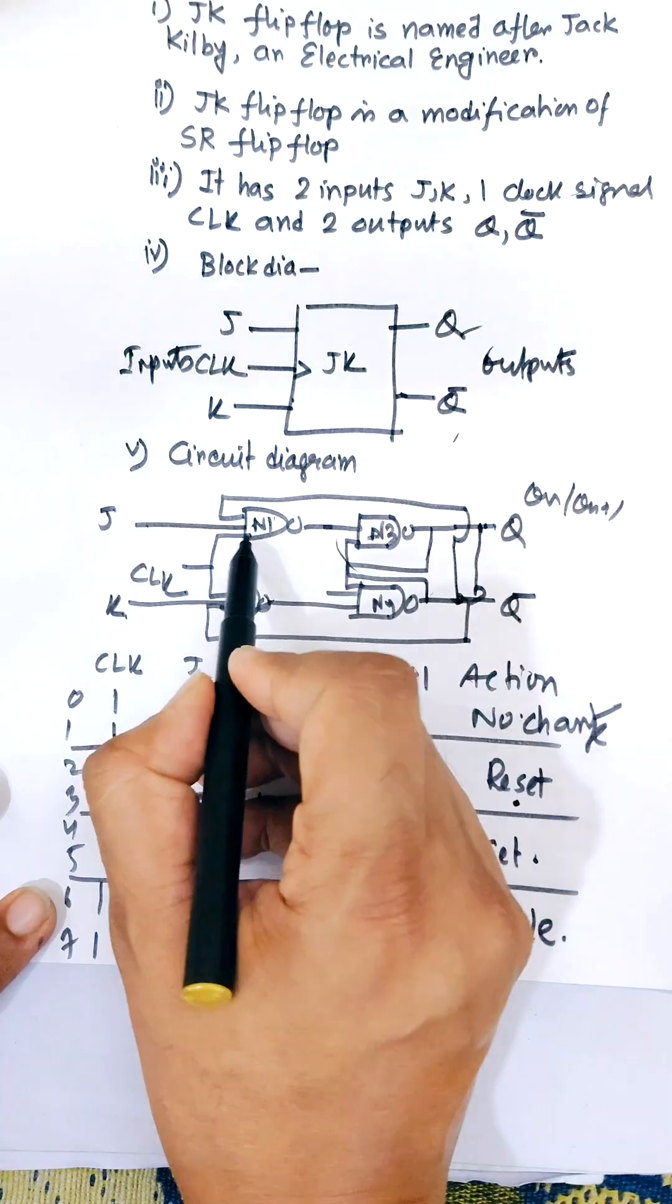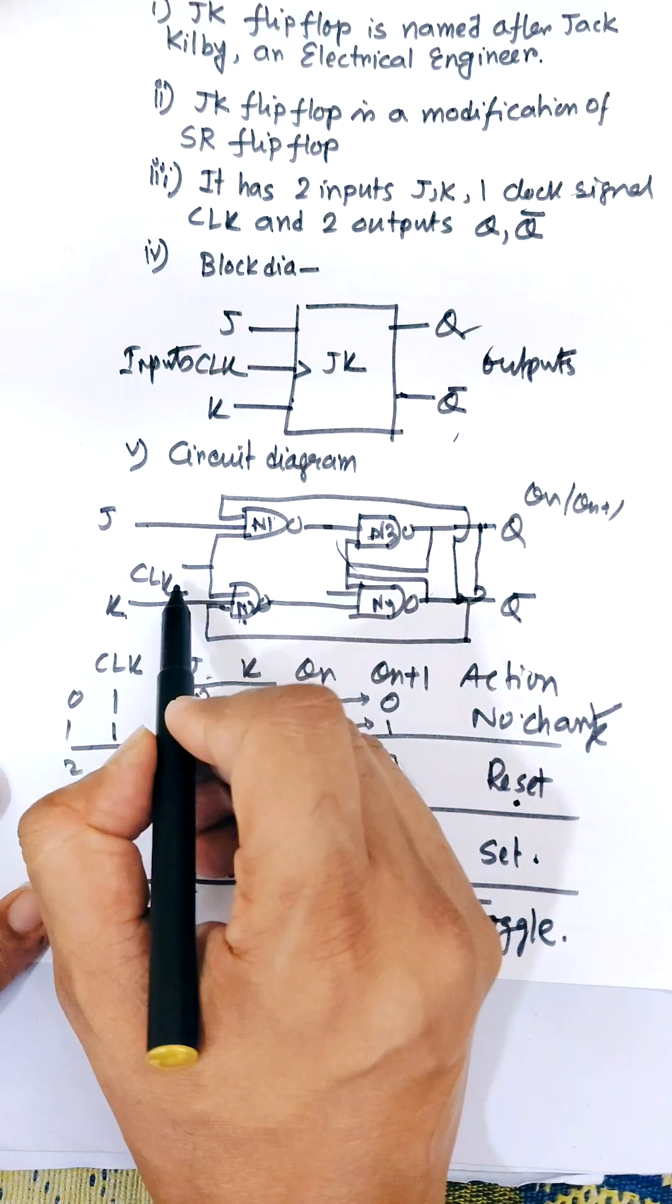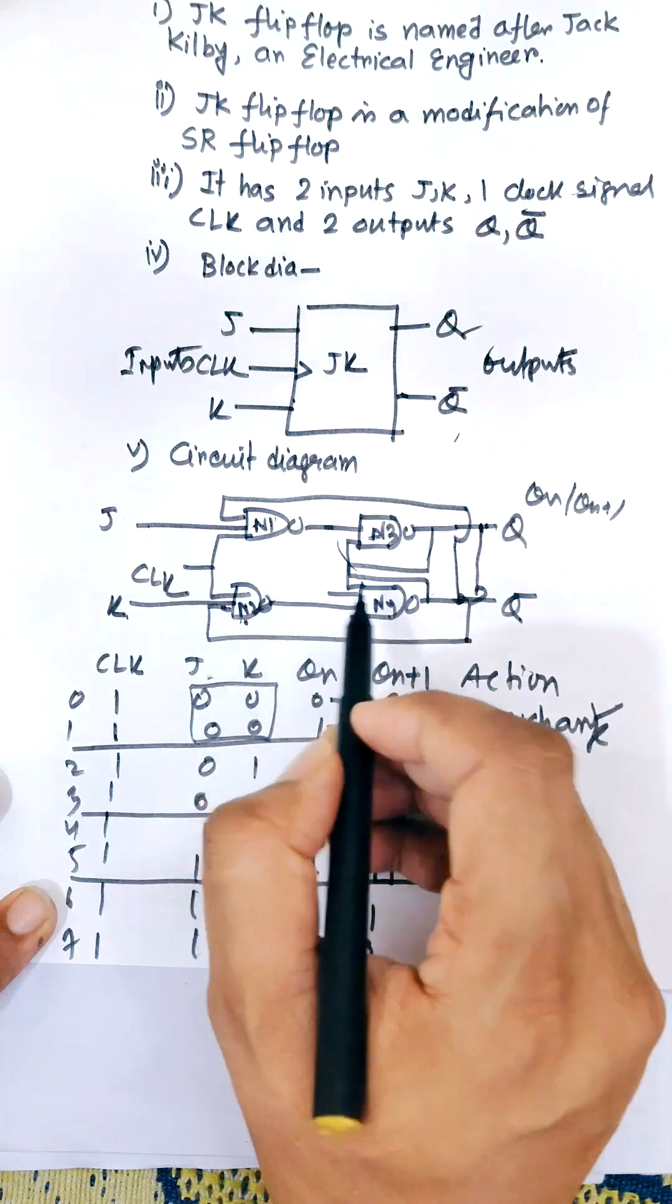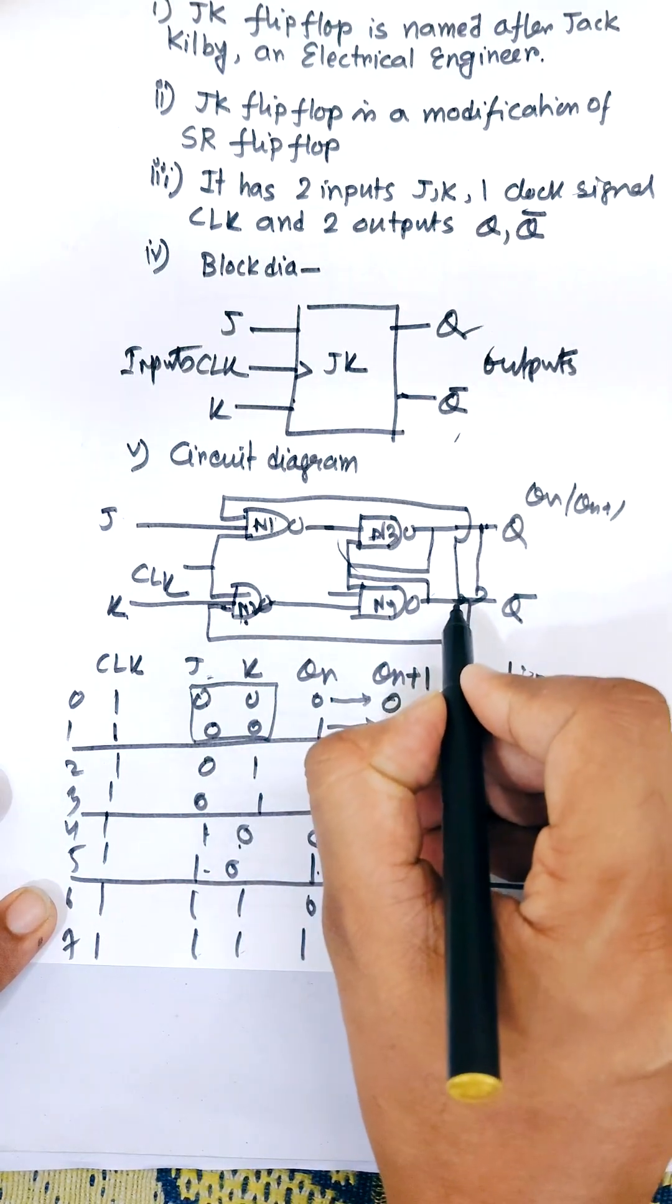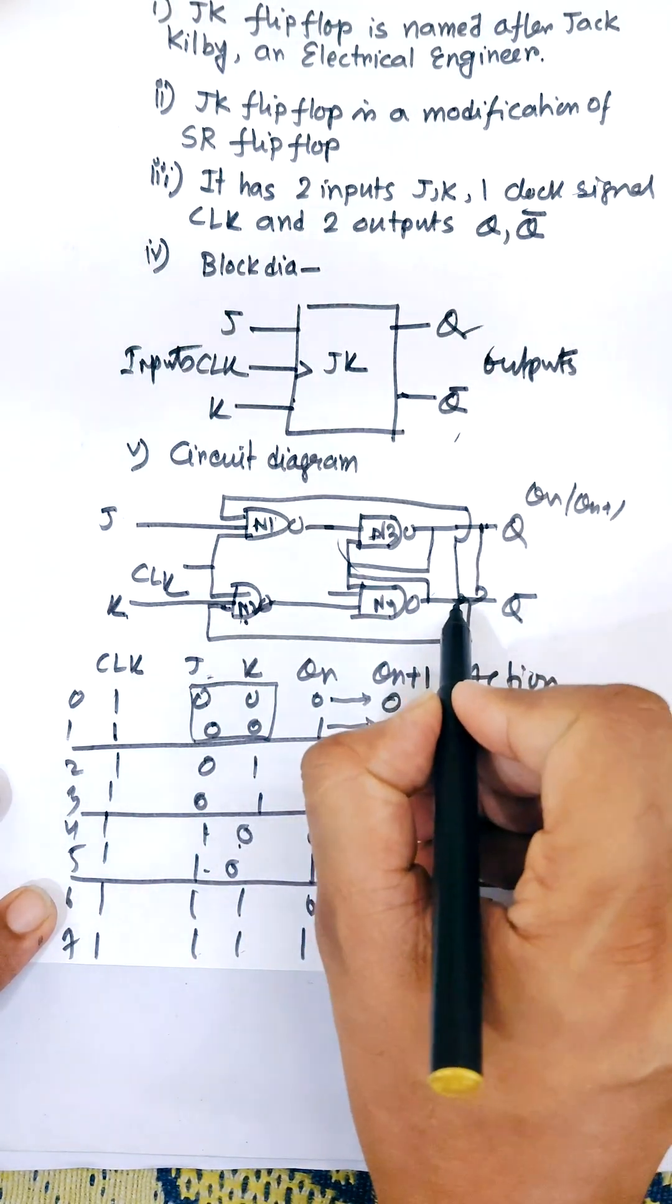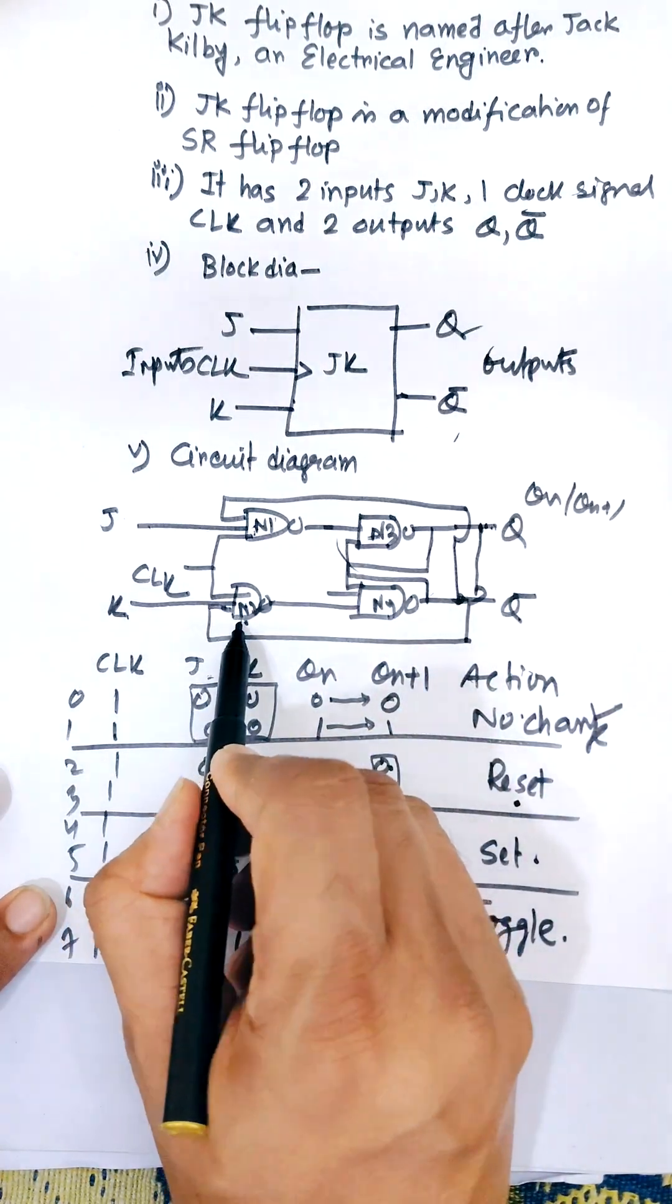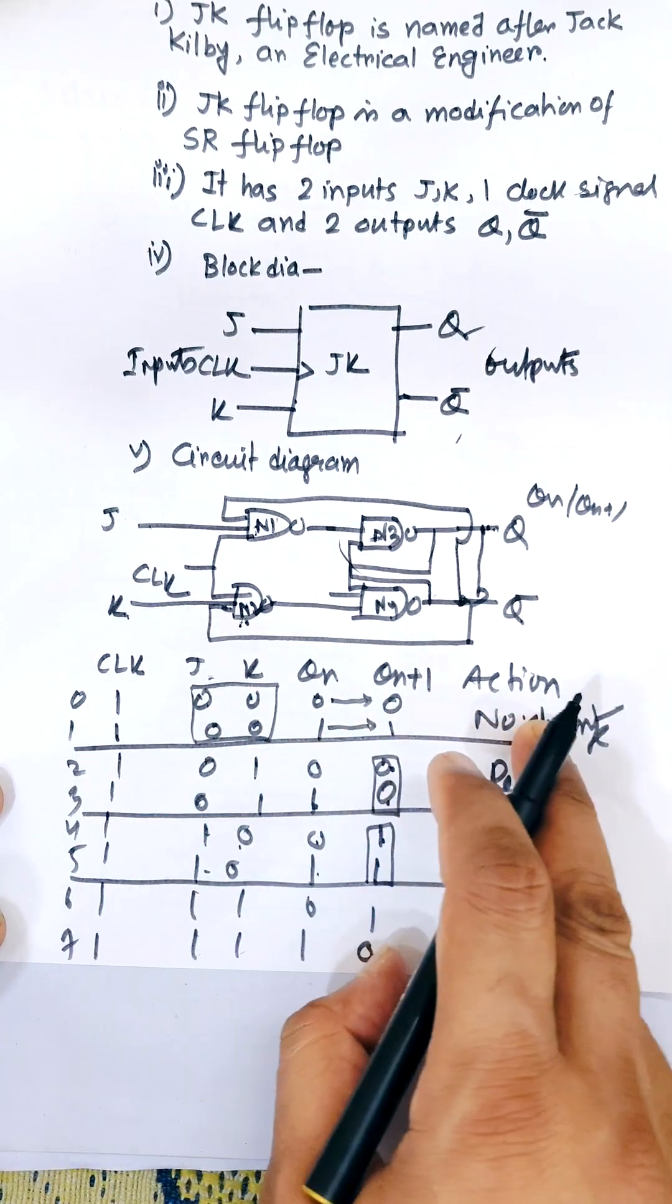Now here the N1 and N2 are connected by a CLK common clock and inputs are J and K. The output of Q-bar is connected to N1 and output of Q is connected to N2. Now finally the circuit diagram is over.